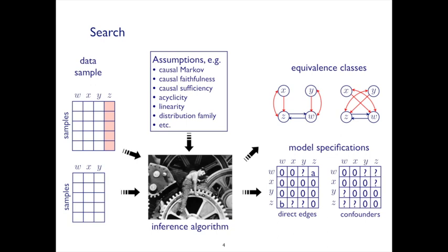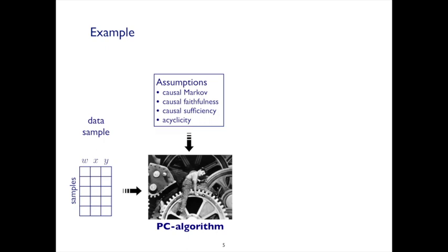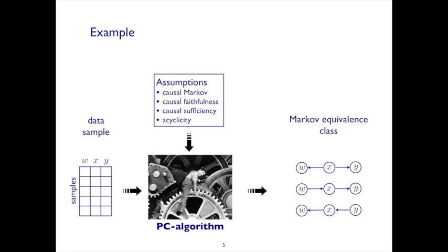In a particular example, for example the PC algorithm with an observational data sample, what assumptions go in? We say causal Markov, causal faithfulness, no latent variables — causal sufficiency — and we assume the graph is acyclic. Then what we get out at best is a Markov equivalence class. So we only know that one of a set of graphs — say the three I've listed there — can be true about the set of variables we've measured.